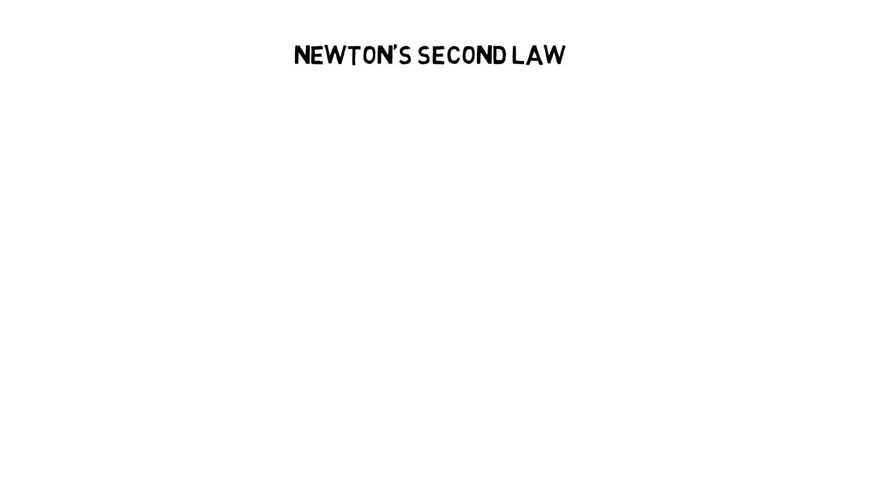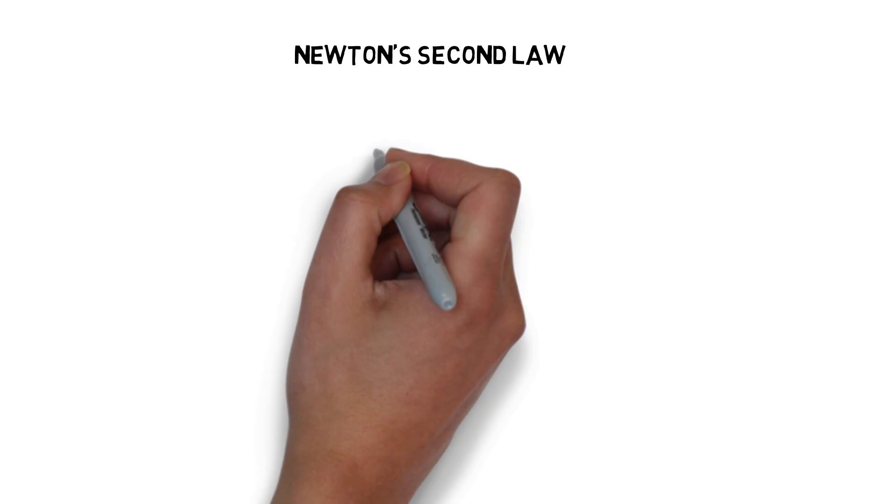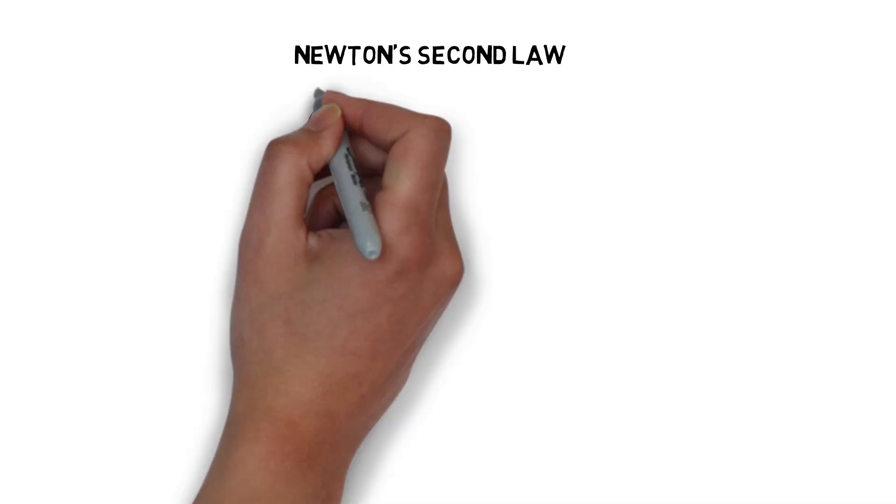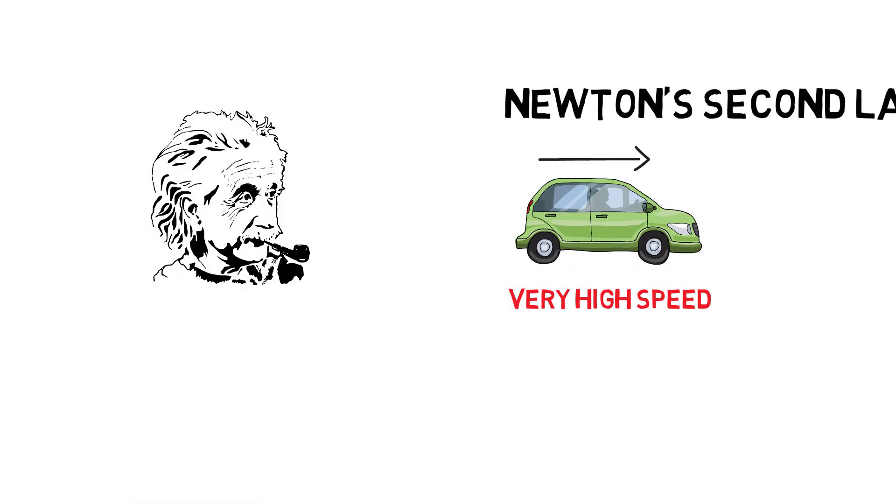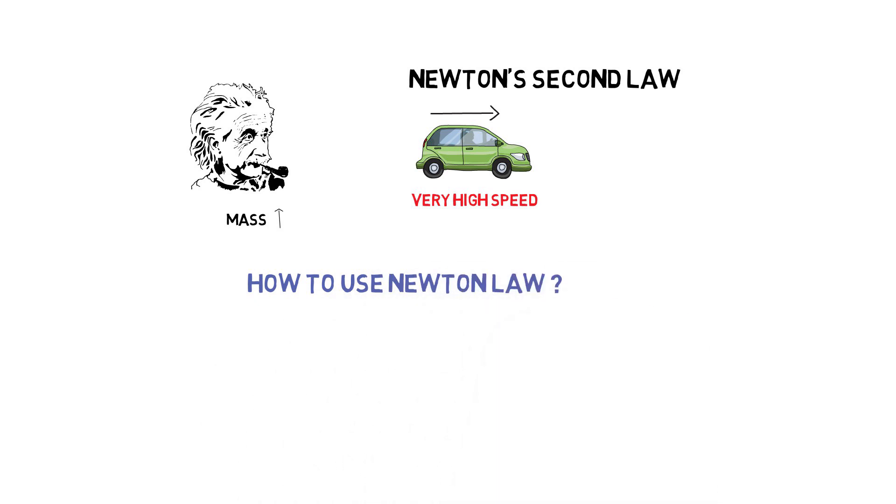Today we are going to talk about Newton's second law, but with a twist. Imagine a situation in which a body is moving very fast. So according to Einstein, the mass of the object increases. Then how do we use Newton's second law to calculate the amount of force acting on the body?